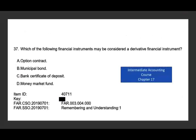This next question should take you about 10 seconds to answer. Which of the following financial instruments may be considered a derivative financial instrument? Is it A, option contract? B, municipal bond? C, bank certificate of deposit? Or D, a money market fund? If you don't know that option and futures contracts are derivative instruments, you should not pass the exam. The answer is A, option contract. This is as basic as it gets — it's a remembering and understanding question, a five-to-ten second question. Move on to the next question on exam day.